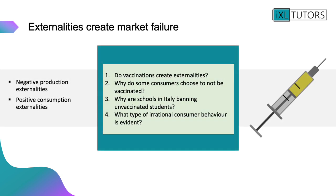Externalities create market failure. Look at an example on vaccinations and answer four questions: first, do vaccinations create negative production externalities or positive consumption externalities? Second, why do some consumers choose not to be vaccinated? Third, why are schools in Italy banning unvaccinated students? And finally, what type of irrational consumer behaviour is evident regarding vaccination? Pause the video to answer those questions.